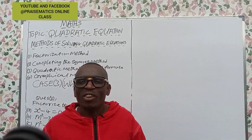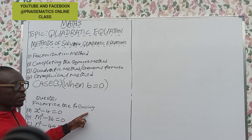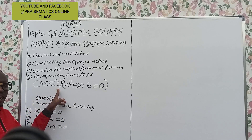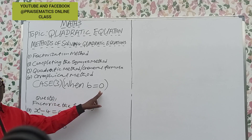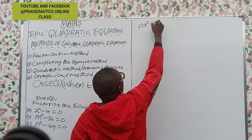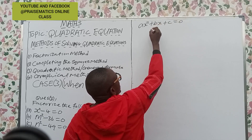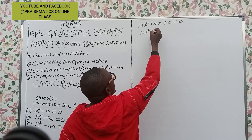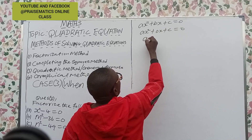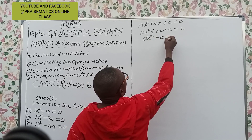Welcome once again to Prismatics Online Class. In this class we are asked to factorize the following. This is Case 3, where b equals 0. In other words, if you have ax² + bx + c = 0 where b is equal to 0, that means we are going to have ax² + 0x + c = 0, which finally gives us ax² + c = 0.